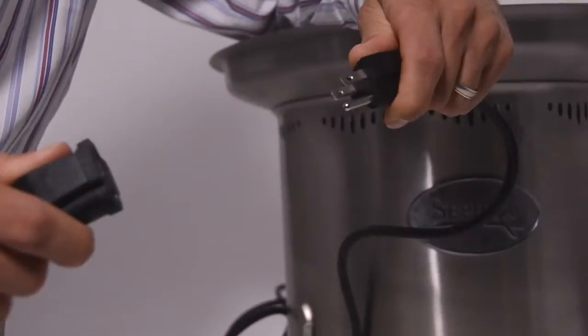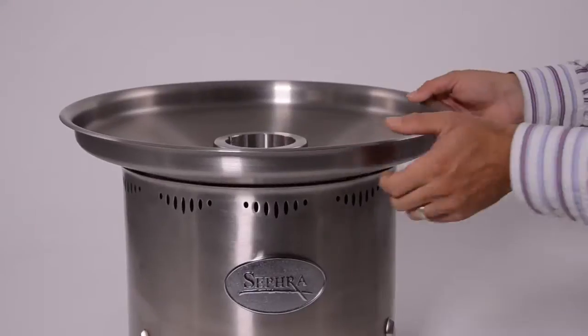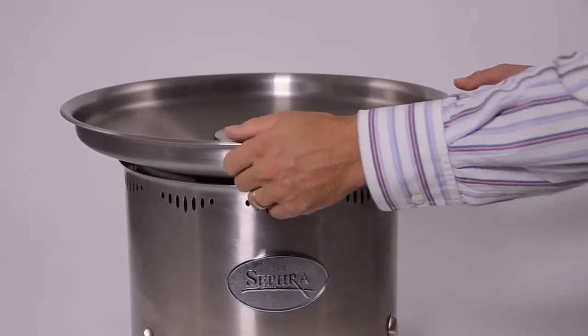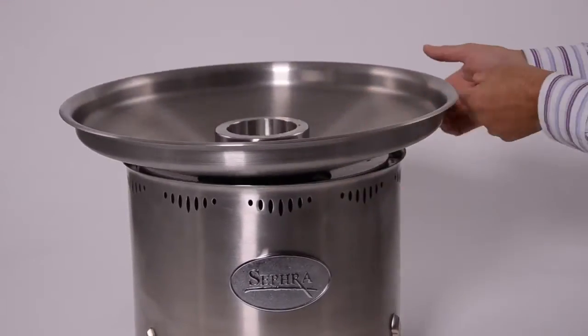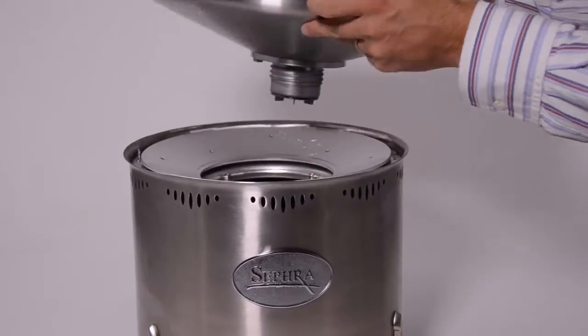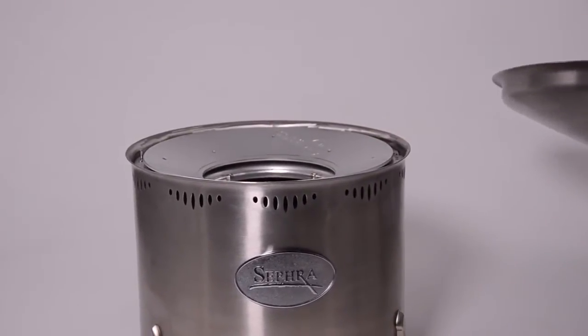The first step is to unplug your chocolate fountain. Next, unscrew the bowl from the basin by turning the bowl in a counter-clockwise motion. You may need someone to hold the basin when initially unscrewing the bowl if it has been screwed on too tight.